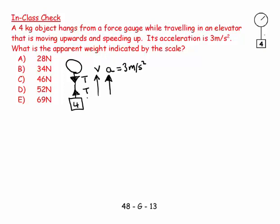It says what is the apparent weight indicated by the scale? So the apparent weight indicated by the scale is this tension, it's that force there. That's my apparent weight because that's what the scale reads. And I look and say is my diagram complete? And it's not. I have to add the gravitational force on the 4kg mass, which is 40 newtons. Now my diagram is complete.